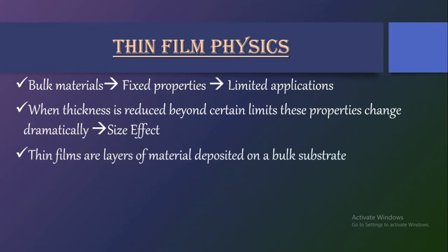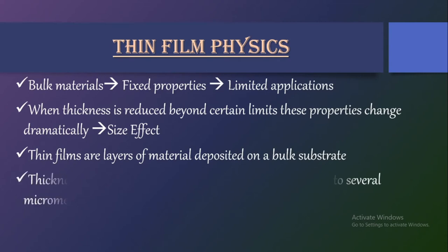So what actually are thin films? Thin films are layers of materials deposited on a bulk substrate in order to impart properties that cannot be easily attained by the base material. The base material is a three-dimensional bulk material on which we deposit a thin film of semiconducting material. The thickness ranges from fractions of nanometers in the case of monolayers — a single layer whose thickness is in terms of fractions of nanometers or angstroms.